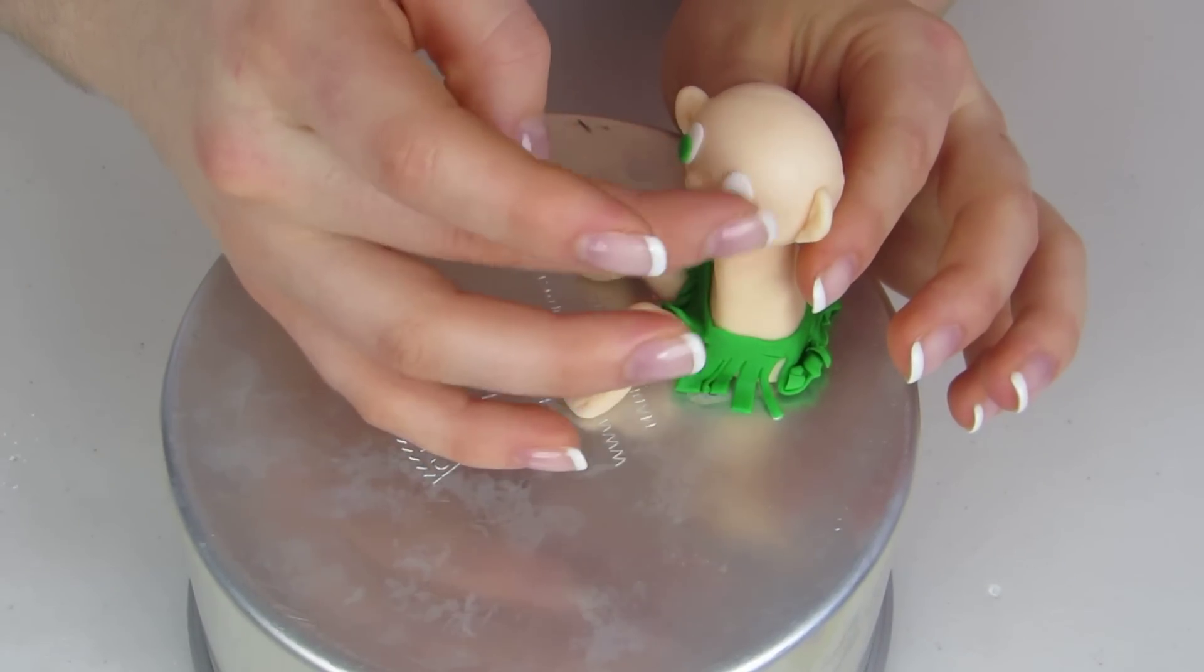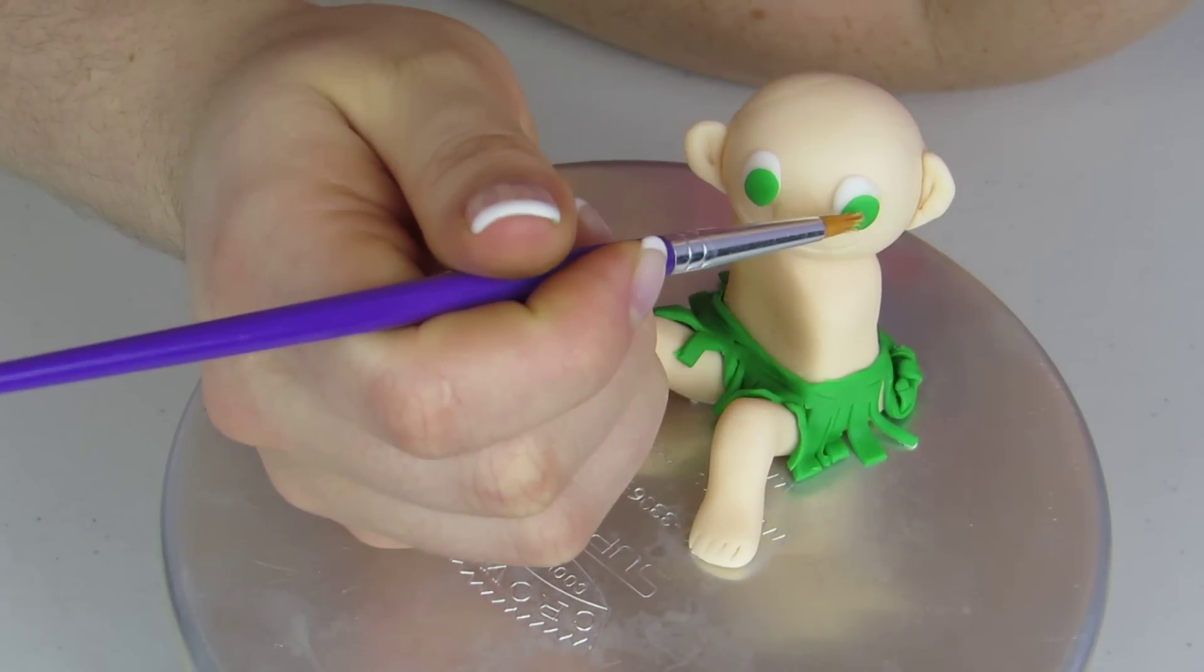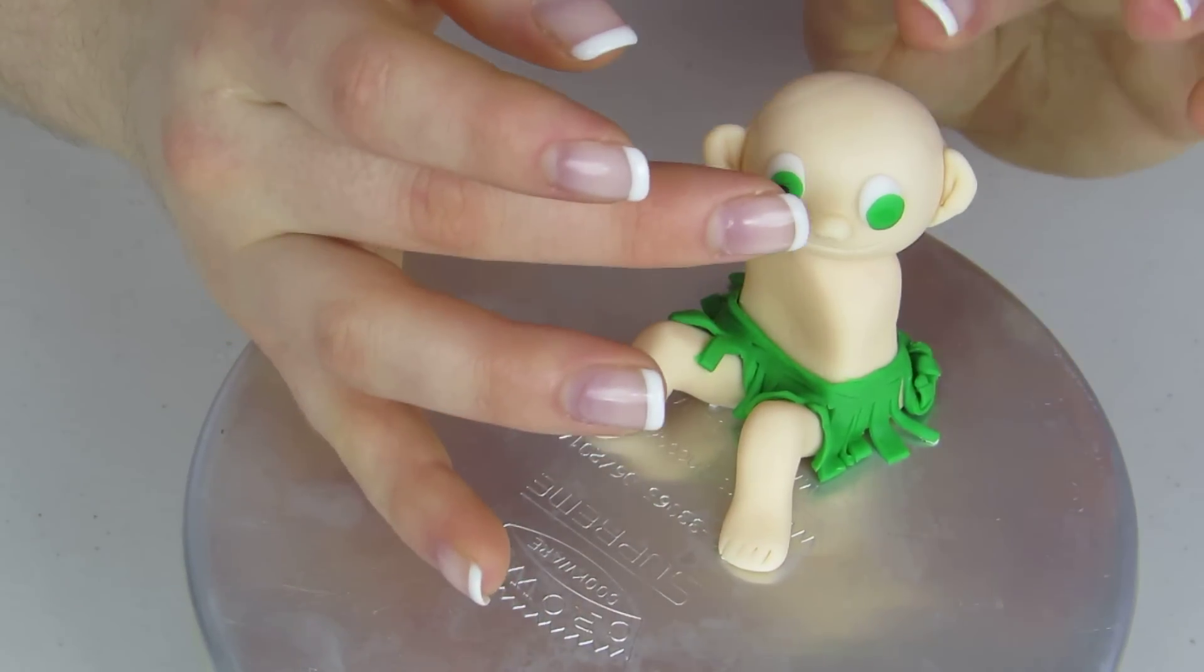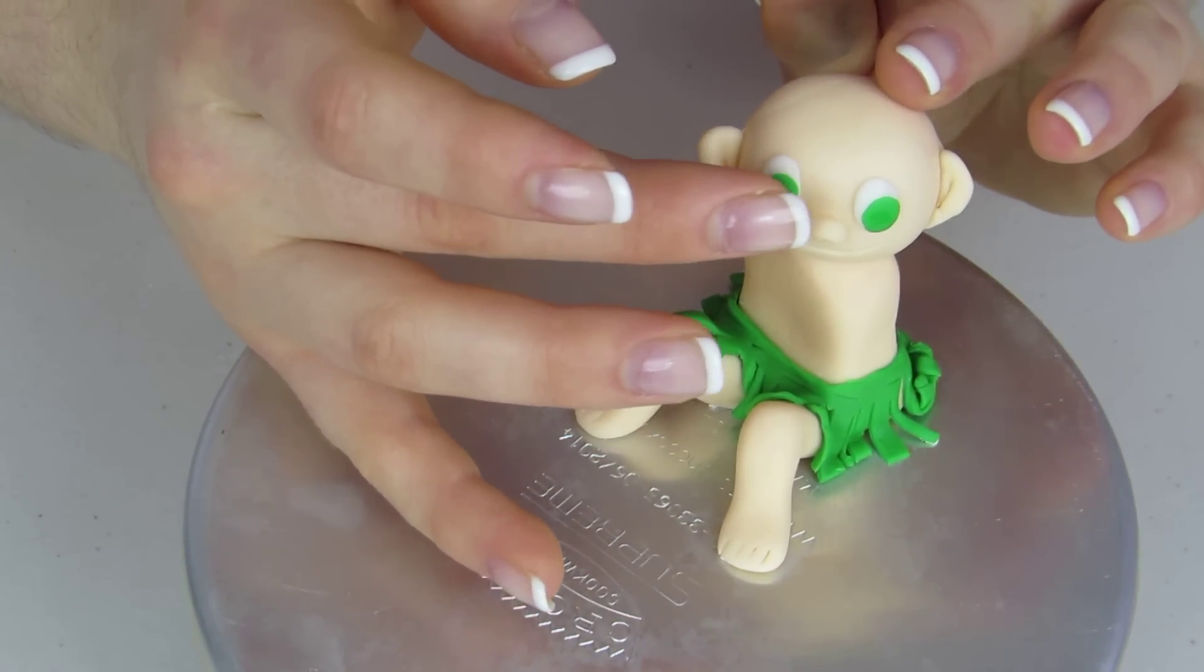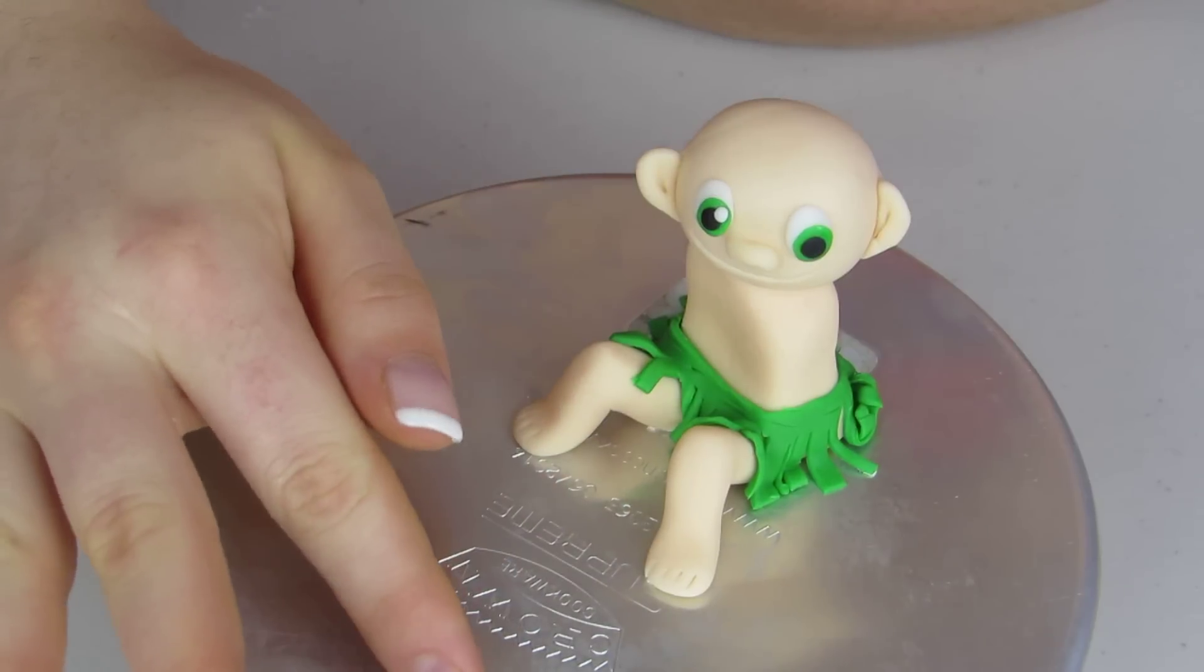And he has some green eyes. So we're gonna start off with the green and then put a black center. Finish it off with a little white speck.